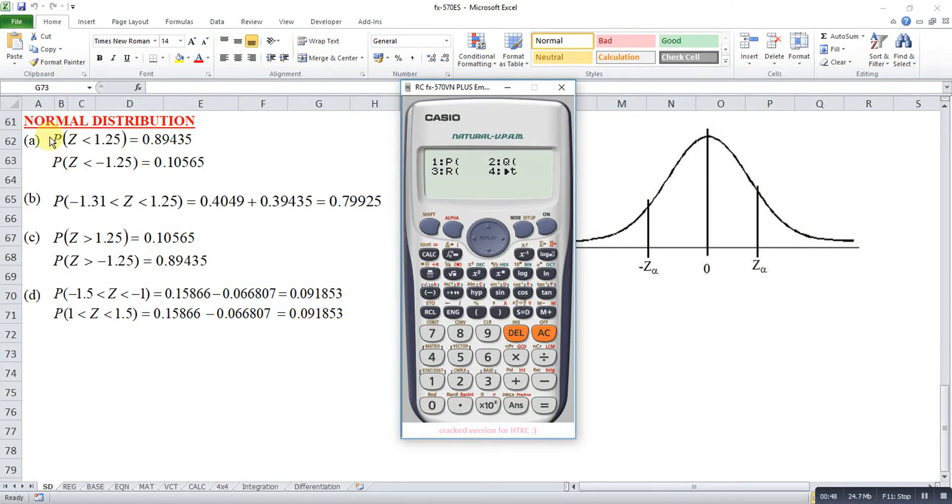For the first one, we want z-score that is smaller than 1.25. This is left. So we press 1. Then we type 1.25. So this one is our answer.